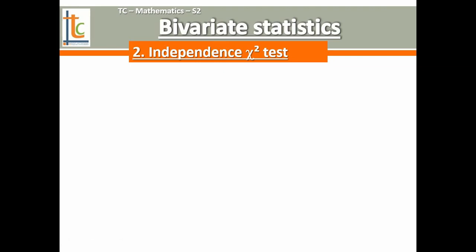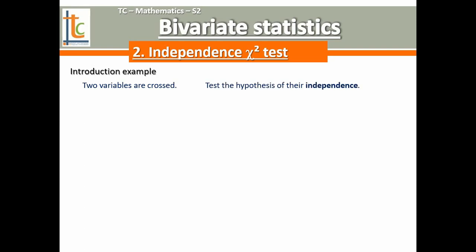The question is: are variables dependent, are they related to each other — numerically speaking of course, not a cause-and-effect relationship here. To answer this kind of question, we have to use a tool that has existed for approximately one century, which is a very commonly used tool in statistics: the independence chi-square test.